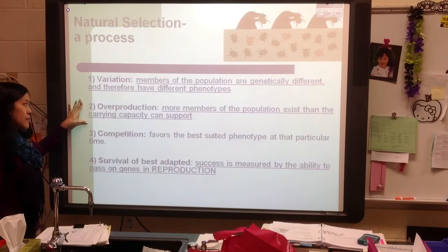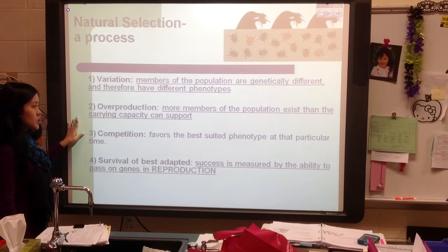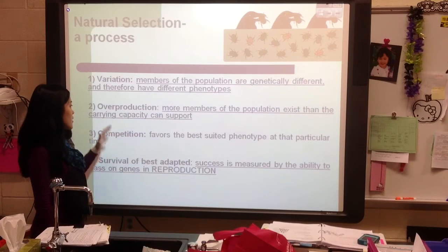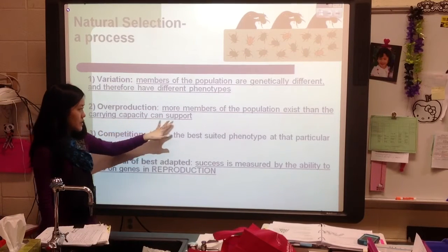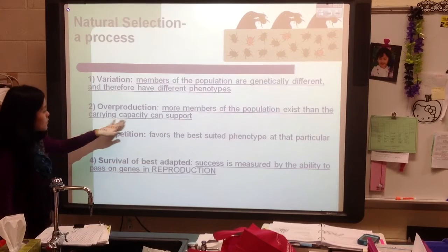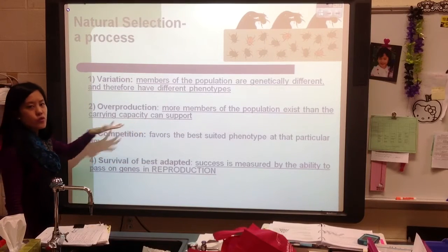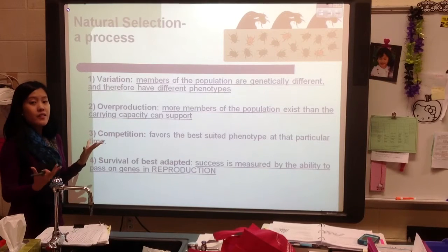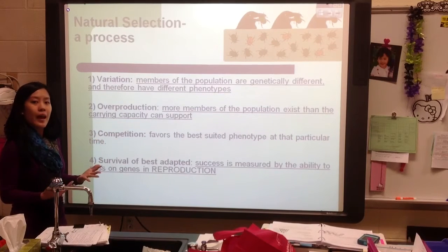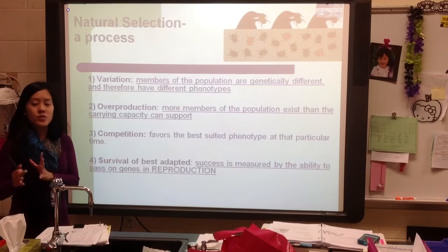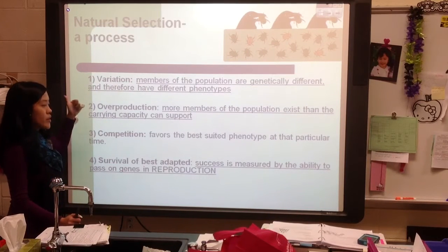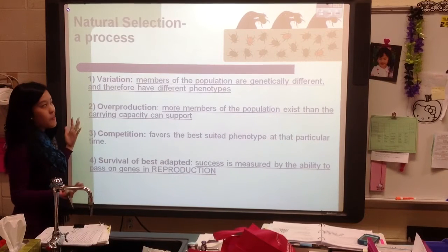The second step is overpopulation. This means that more members of the population exist than the carrying capacity can support. Carrying capacity refers to how much food, space, land, and resources are available to support the individuals living in that environment. In many cases we're going to have more than necessary, because what usually happens? Some of them die.